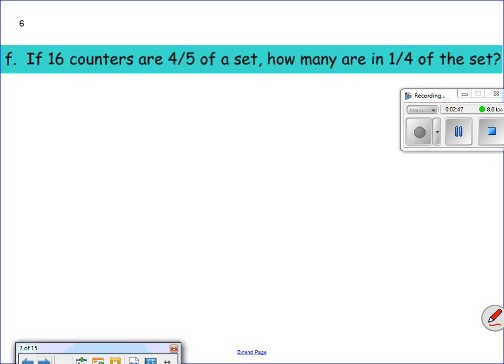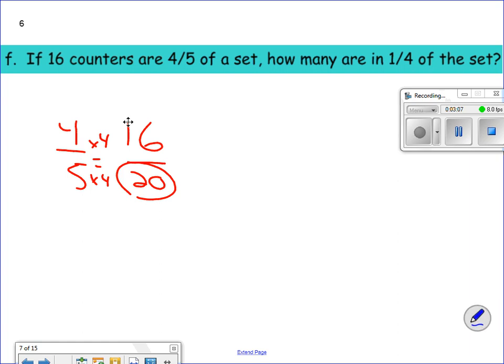If 16 counters are 4 fifths of the set, how many is 1 fourth of the set? So 16 counters is 4 fifths. So 16 is my numerator, because it's not the whole set, right? I'm going to put 4 fifths into 16. Times 4 gives me 20. So 20 is my set. So 20 is my denominator, because that's what my set is. But I want to find out what 1 fourth is. Times 5 gives me 5. 1 fourth of my set is 5.